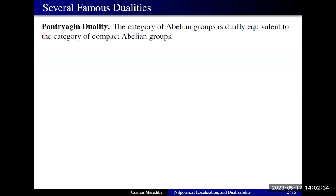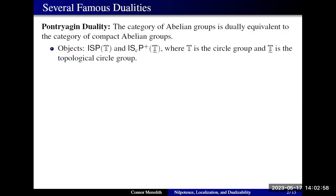The key example we want to keep in our head is that of Pontryagin duality, which tells us that the category of abelian groups with group homomorphisms is dually equivalent to the category of compact Hausdorff abelian groups with continuous group homomorphisms. Every abelian group is isomorphic to a subgroup of a power of the circle group, and every compact abelian group is isomorphic to a closed substructure of a power of the topological circle group.